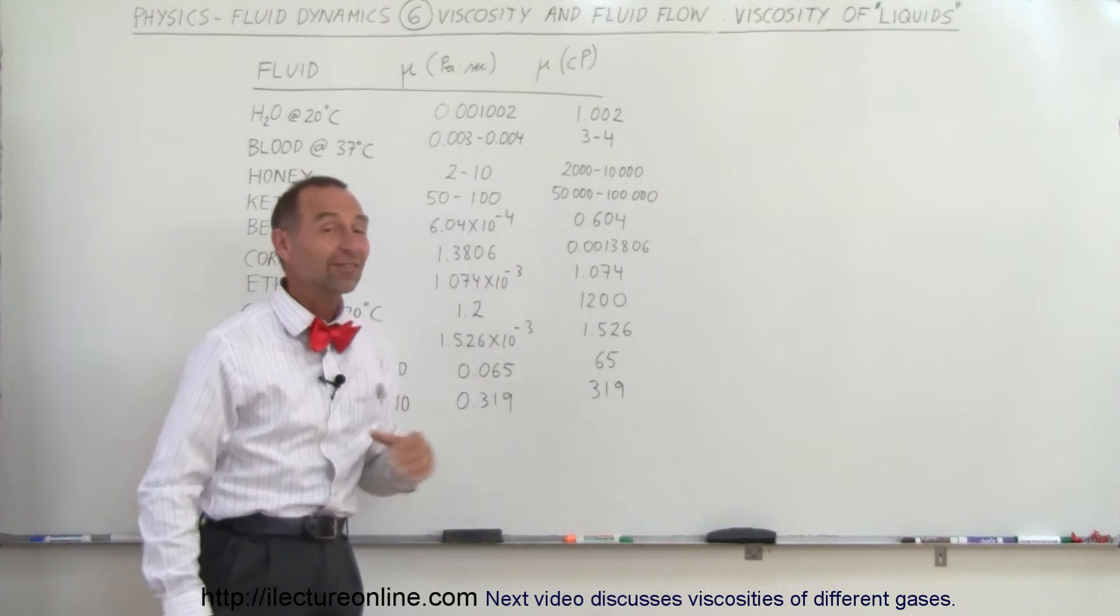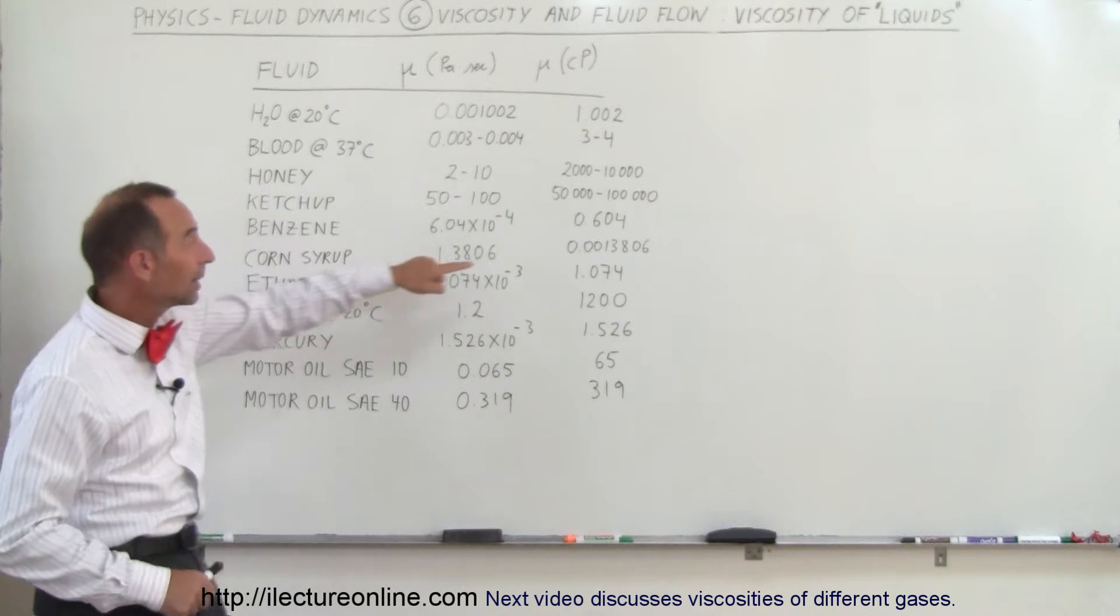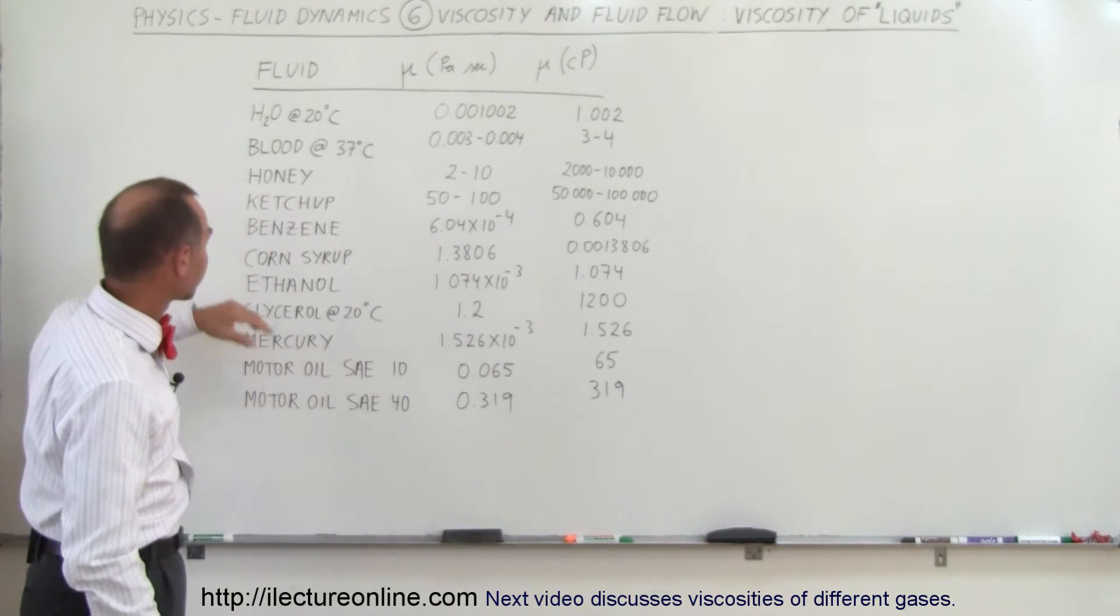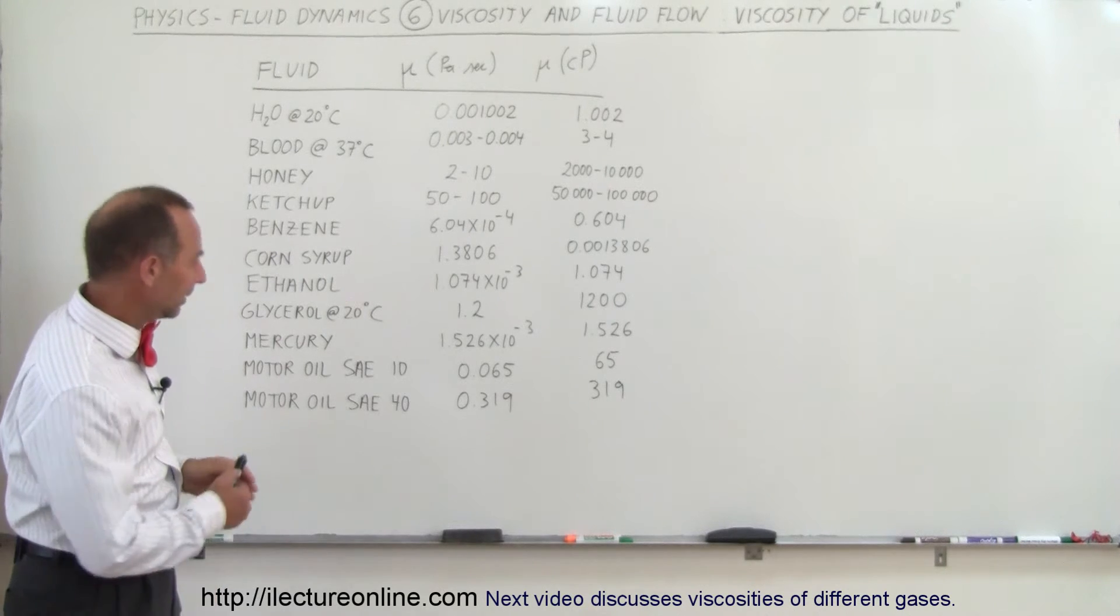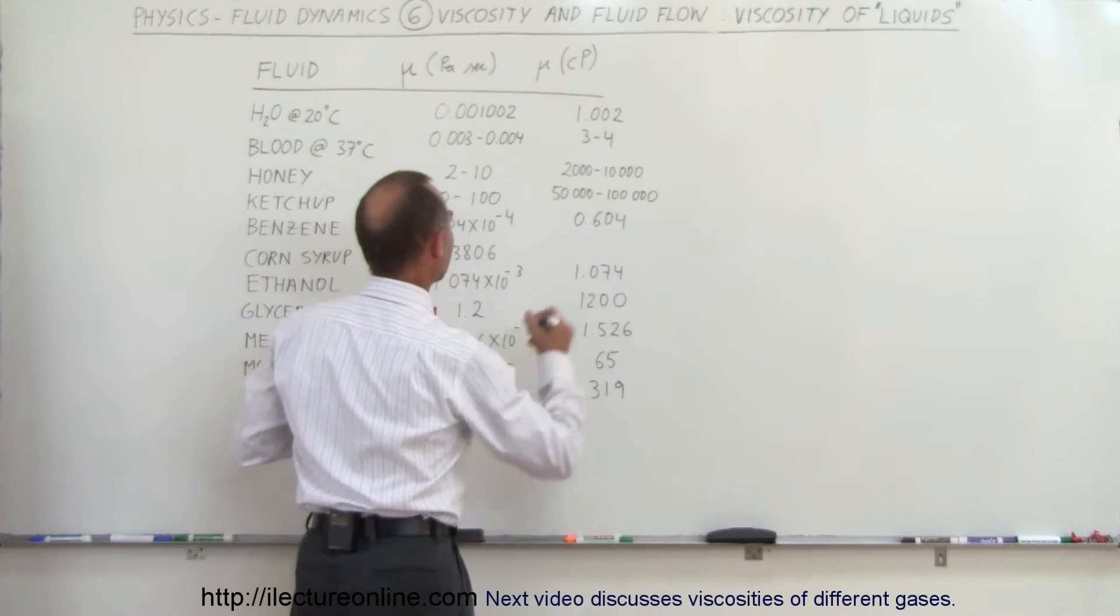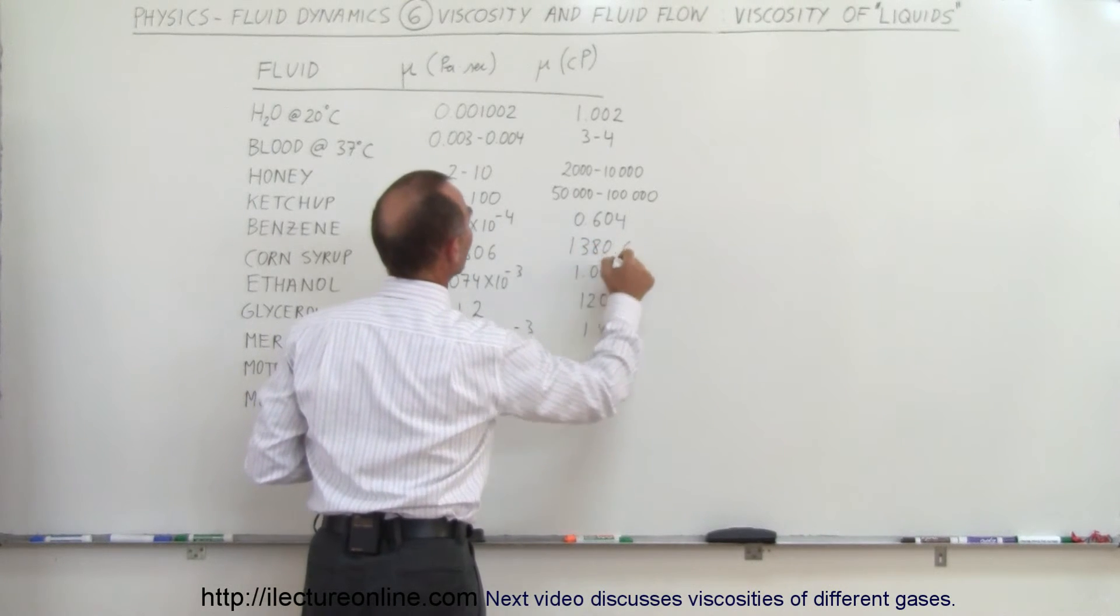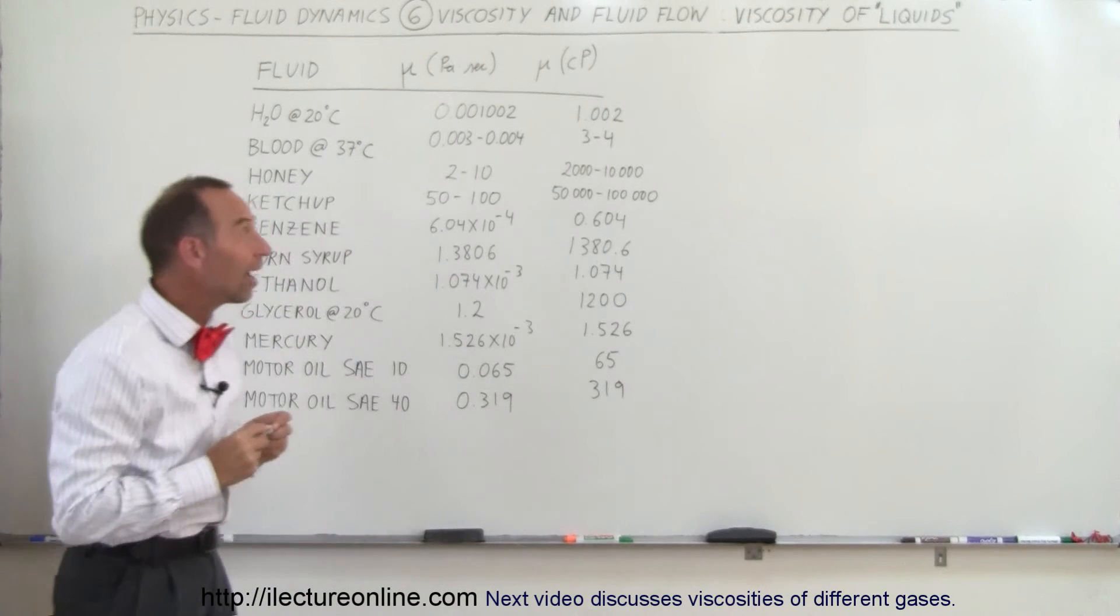Benzene is a little bit less than the viscosity of water. Corn syrup—oh, I made a mistake here—corn syrup is 1,380.6 centipoise, so it's over a thousand times the viscosity of water.